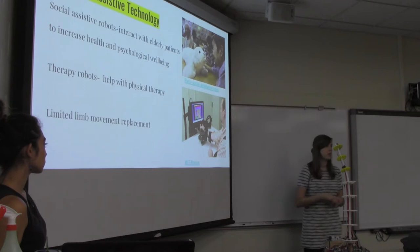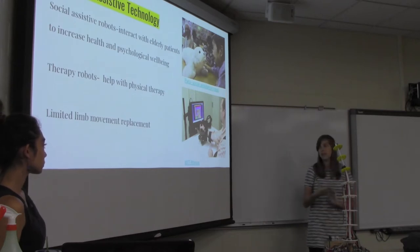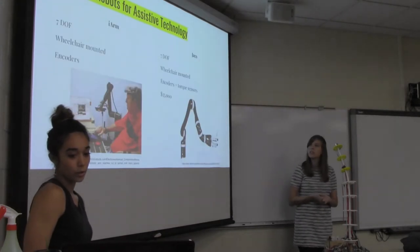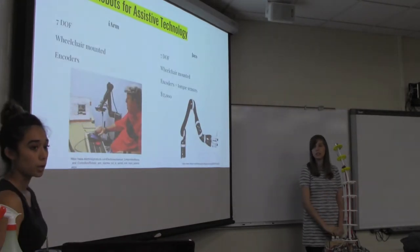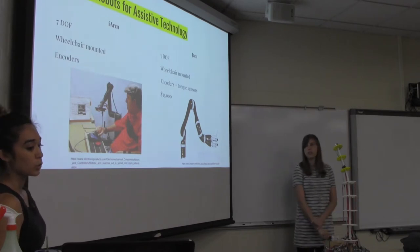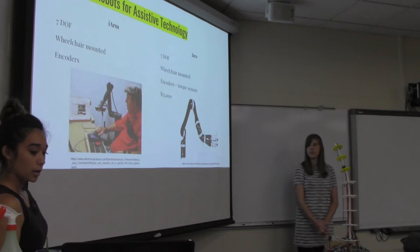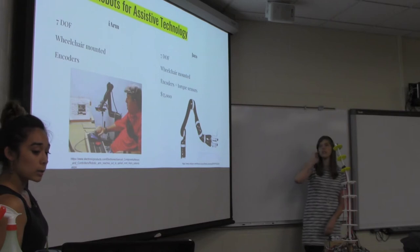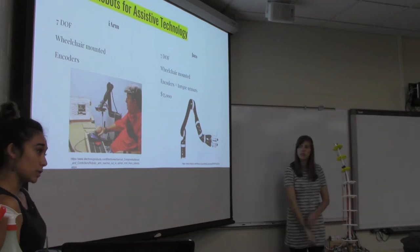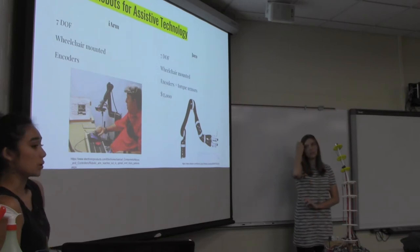And then there are also robots that replace limited limb movement, so if your arms don't work as well. Rigid-link robots are examples of those that can help with limited limb movement. The i-Arm and the JACO arm are the two most popular on the market today. They're both rigid-link robots that are 7 degrees of freedom. They're both wheelchair-mountable, and they use encoders and torque sensors to help guide precise movement. And they're a bit expensive. The JACO arm can go for about $35,000, and insurance does not always cover this, so oftentimes the load will be put onto the consumer.